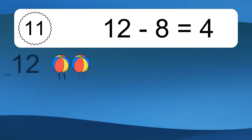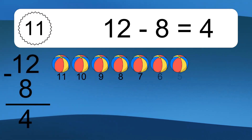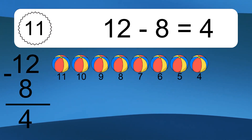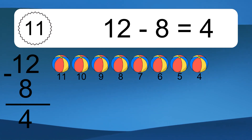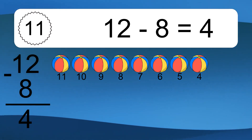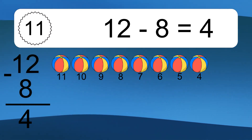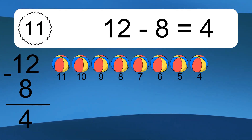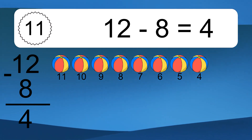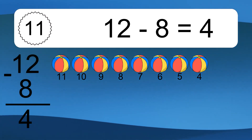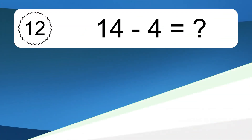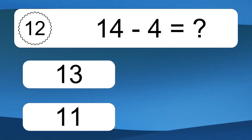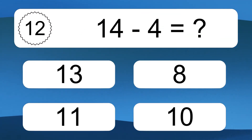12 minus 8 equals what? 12 minus 8 equals 4. Let's count it: 11, 10, 9, 8, 7, 6, 5, 4.